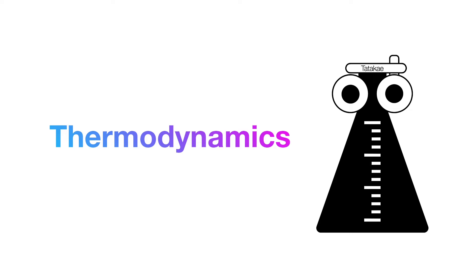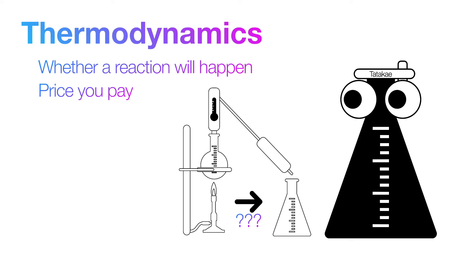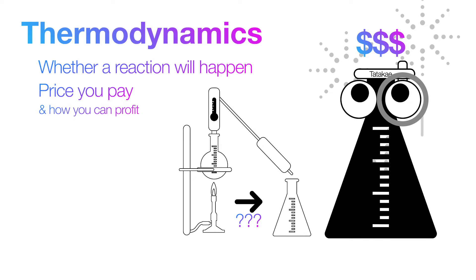Thermodynamics is an essential tool for chemists. It tells us if a chemical reaction would happen and the price you would pay for it to happen. By the end of this video, we're going to talk about the price you pay for reactions and how you can actually profit from the monopoly game that is chemistry.